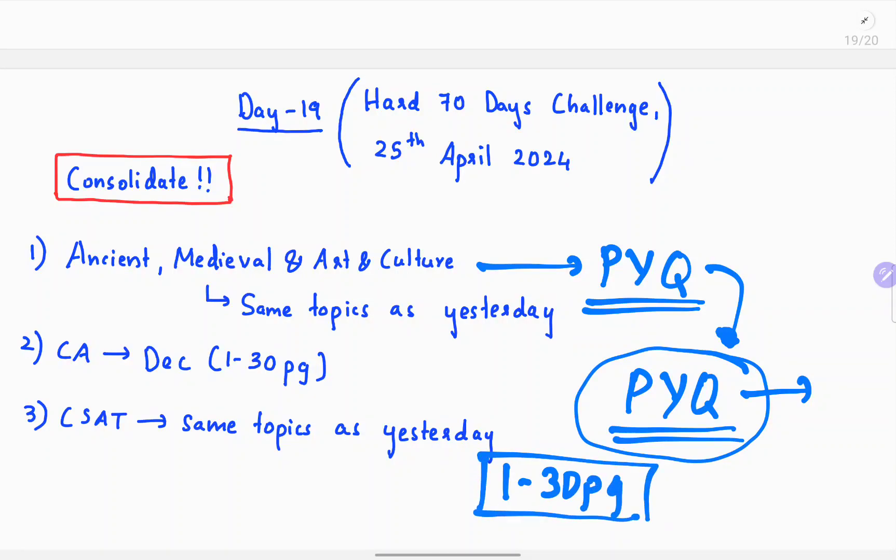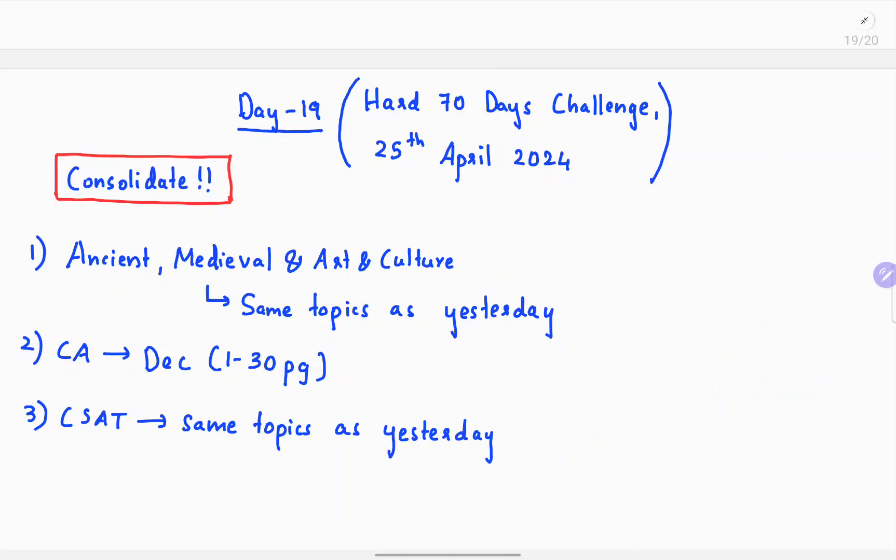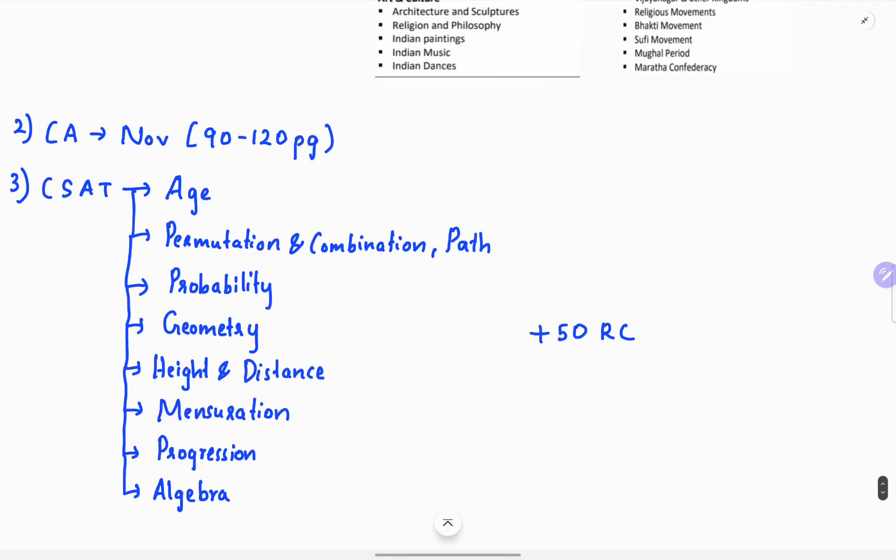The next topic is CSAT. I already said that we'll cover Age, Permutation and Combination, Probability, Geometry, Height and Distance, Mensuration, Progression, and Algebra. These are the CSAT topics we'll be covering.